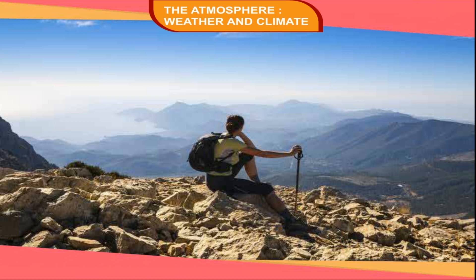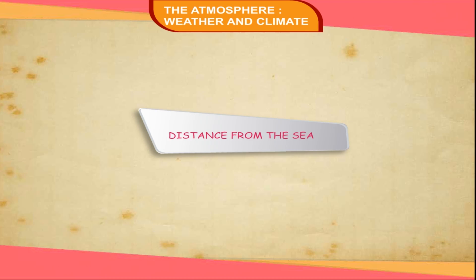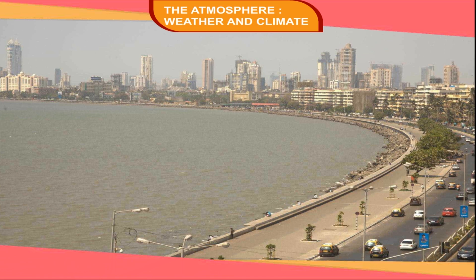Distance from the Sea. Places near the sea or any large water body never experience extremes of temperature — they always remain mild or moderate. Such a climate is called maritime. Places that are away from the sea experience extreme temperatures, and this climate is called continental or extreme. For example, Mumbai has a maritime climate, while Delhi has a continental climate.